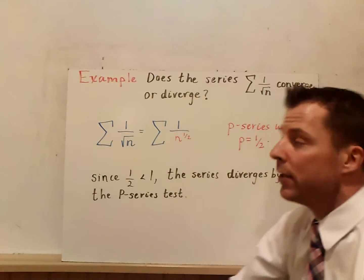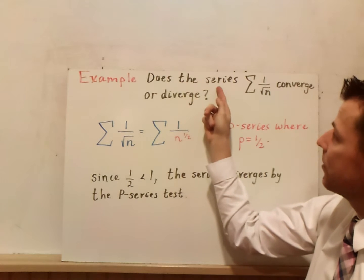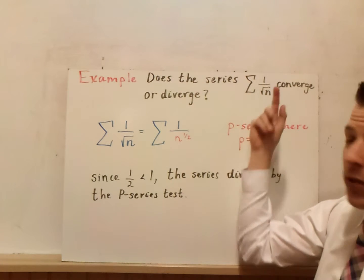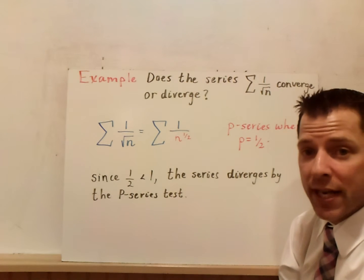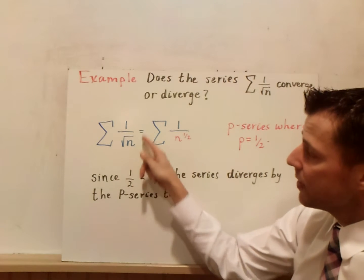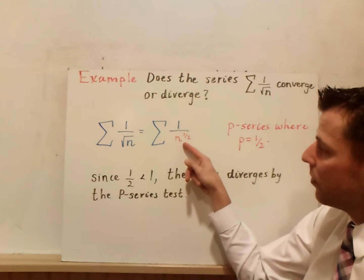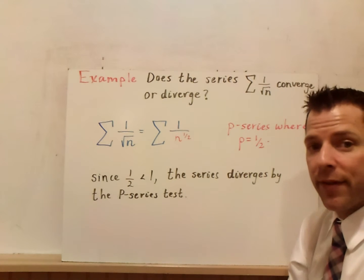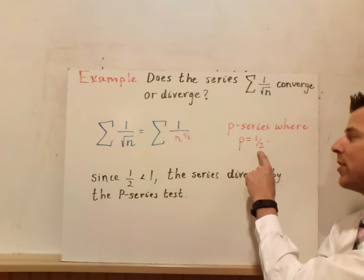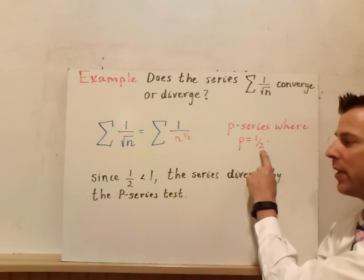Last one. Does the series 1 over square root of n converge or diverge? I can rewrite the square root of n as 1 over n to the 1 half. So p, in this case, is going to be a p-series where p equals 1 half.